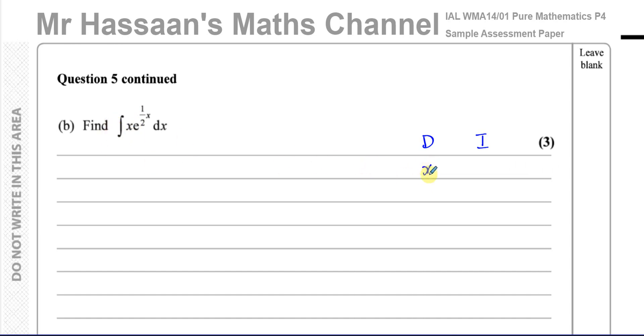So here I'm going to choose the x in place of the D and e to the power half x in place of the I. So I'm going to differentiate this until it gets to zero. If I differentiate x I'm going to get one. If I differentiate one I get zero, so I'm going to stop there.